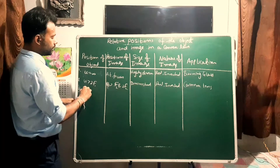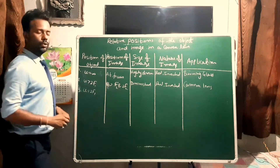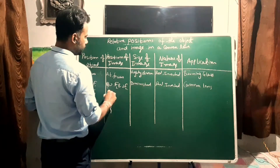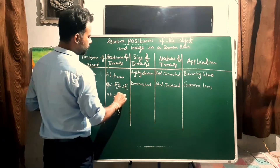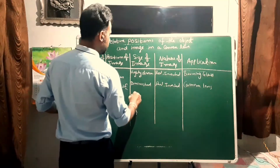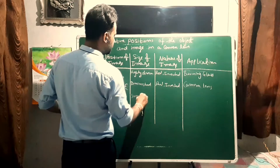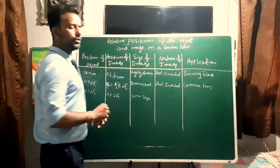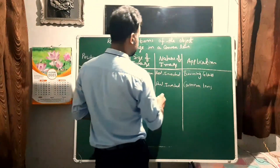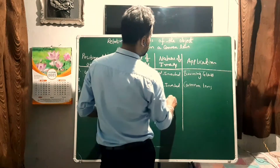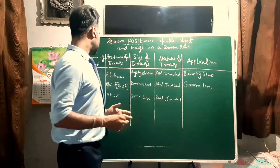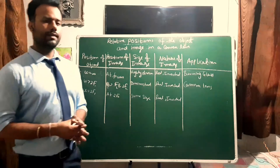Third case: when u is exactly at 2f1, the image is also at 2f2. In this case, the image is of the same size as the object. The nature is real and inverted. This condition is used in a terrestrial telescope.